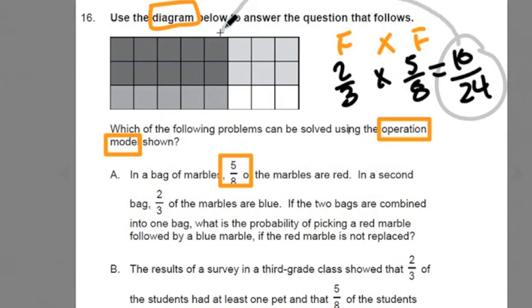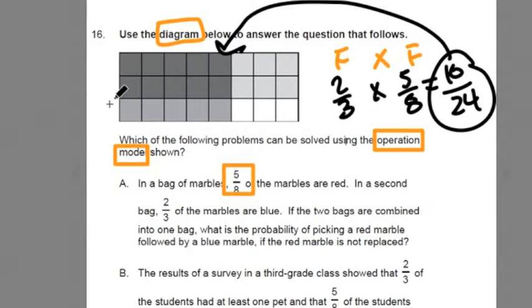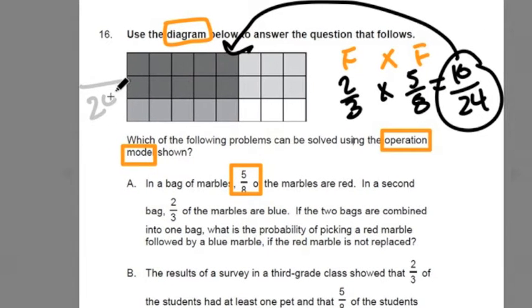Now, let's take this answer and go back to the diagram here. Notice that our whole is made up of 24 squares. 3 by 8 is 24.